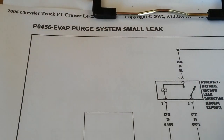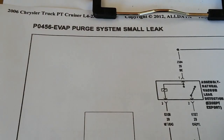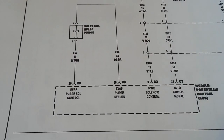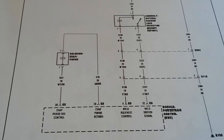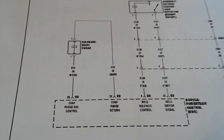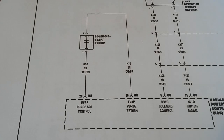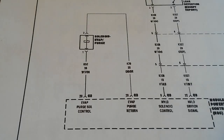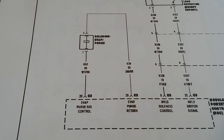I'm going to show you guys the P0456 evap purge system small leak circuit diagram for this vehicle. As you can see there are two circuits on this diagram. I'm going to focus more on the evap purge solenoid for now, since we're attacking the purge solenoid as the cause of this small leak. If we need to diagnose the natural vacuum leak detector, I'll go more in depth on that system. For now it's the purge solenoid.